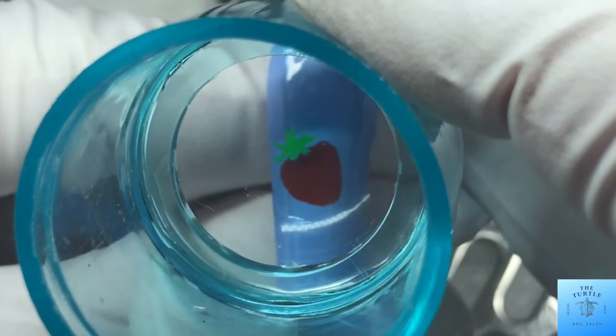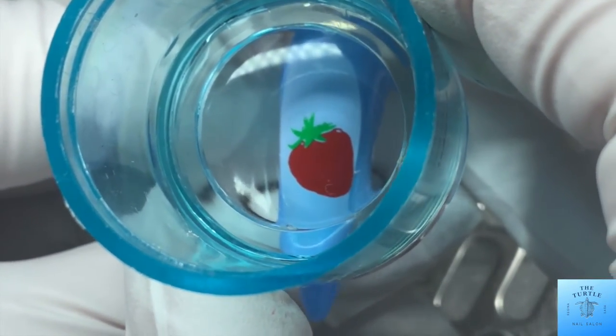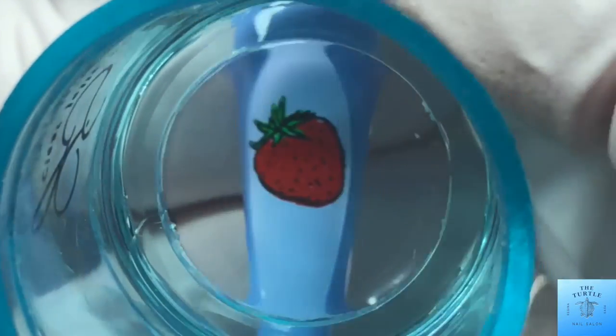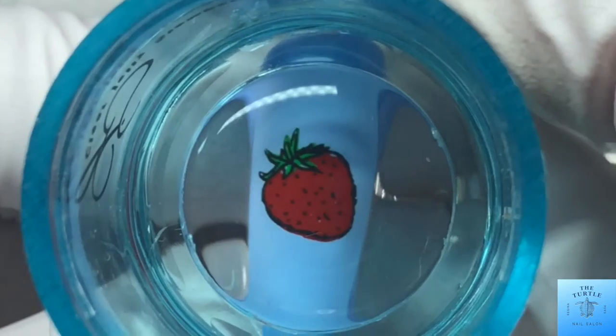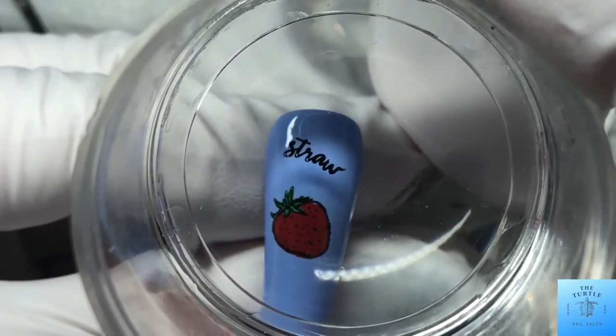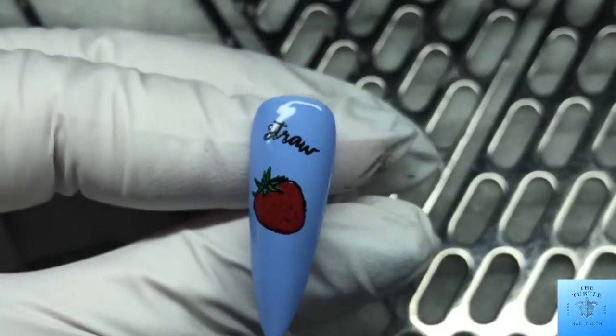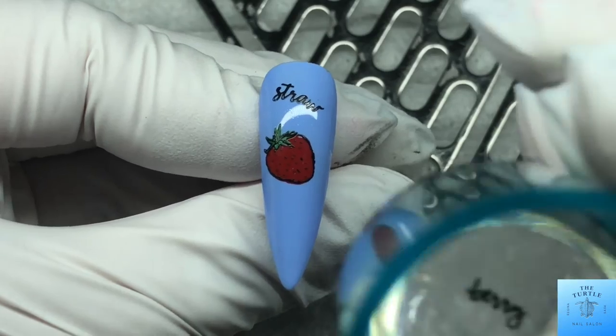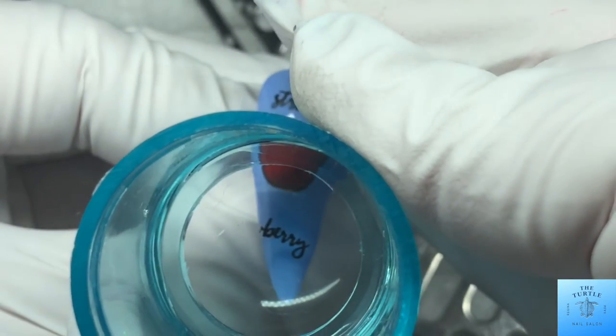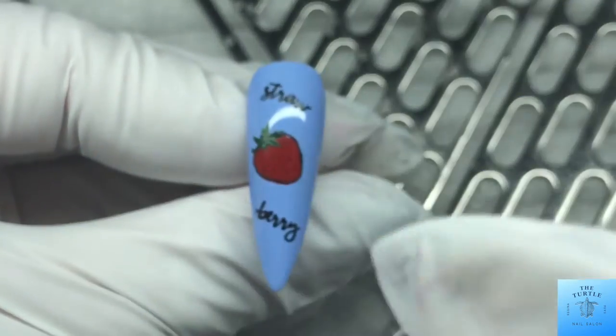And the stem, and then the outline and the seeds. And then I'm going to put the word strawberry in two parts. This is one full word so I just took the stamping scraper and I held it down where I didn't want the letters to be on the Clear Jelly Stamper head, and then that just gave me half of the word.